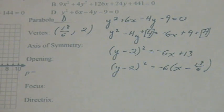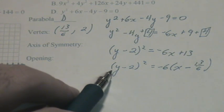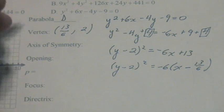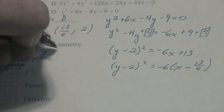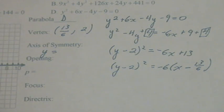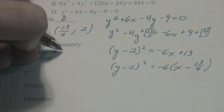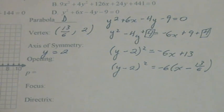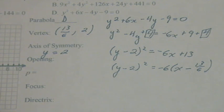The axis of symmetry. The y is the variable being squared, so the axis of symmetry is y equals, well, look at the vertex. In the vertex, y is 2, so the axis of symmetry, y equals 2.